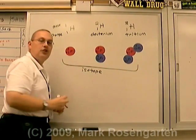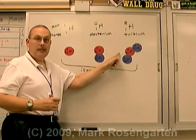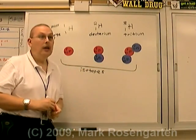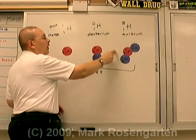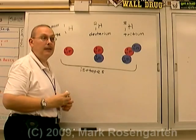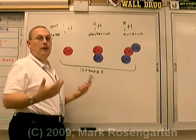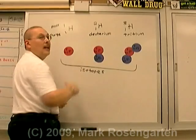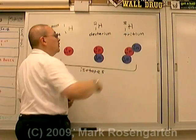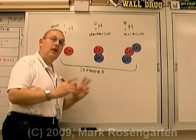The definition of isotopes are atoms of the same element with different numbers of neutrons. Notice they're all the same element — they all contain one proton — but the number of neutrons varies, therefore the mass varies as well. Those are isotopes. Tritium is a radioactive isotope, and we'll take a look at that in our next segment.